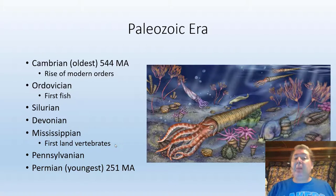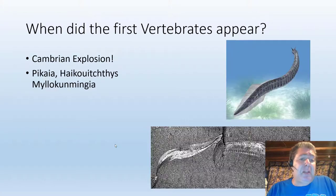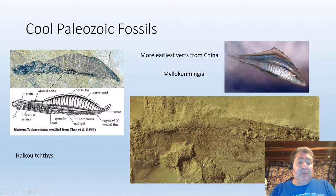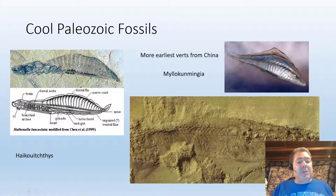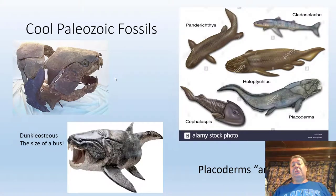When did the first vertebrates appear? Right at the beginning of the Cambrian. Pikaia was found up in Canada, and exciting finds have come out of China — Haikouichthys and Myllokunmingia. Here are the actual fossils and a reconstruction. These are so primitive they aren't even fish, but they are vertebrates because they have a notochord, which is a key vertebrate feature.